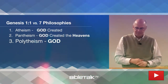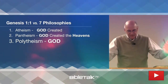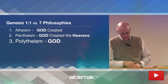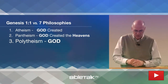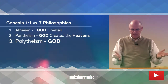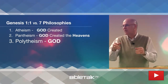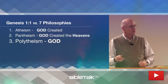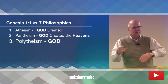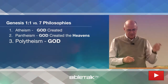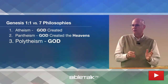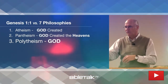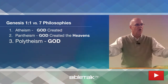Polytheism teaches a multiplicity of gods. The Greeks, the Romans, many ancient people as well as primitive peoples of today believed in many gods. But Genesis 1:1 says that only one God created all things. There wasn't the good God and the bad God and the God of trees and the God of animals. Just one God created all these other things.